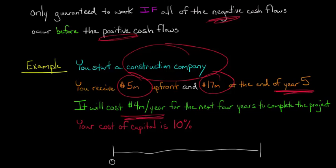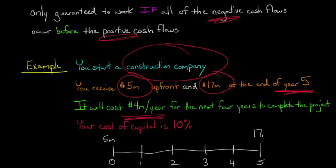This is a five-year project. So here's year zero, year five, then year one, two, three, and four. In year zero — the beginning of the project — you're going to get $5 million. Then between that initial cash flow at year zero and the end at year five where you get $17 million, you're going to have negative cash flows of $4 million per year for four years. So you get $5 million up front, then negative $4 million each year for years one through four, and at the end of year five you get the final payment of $17 million.